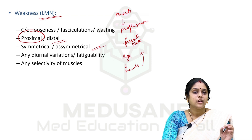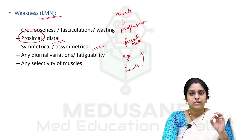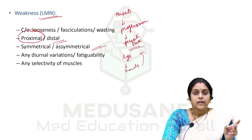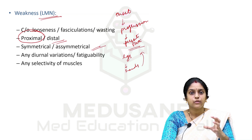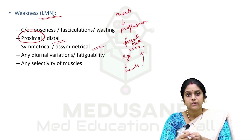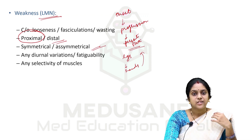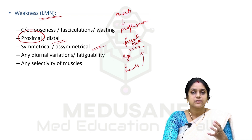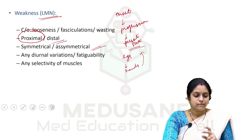Assessing onset, progression, and present state is very important for any symptom — whether it is upper motor neuron or lower motor neuron weakness. We also have to keep in mind that in certain disorders, only certain muscles will be involved. We need to see if only the thenar eminence or only the hypothenar eminence is involved, and ask questions accordingly to determine whether it is lower or upper motor neuron weakness.